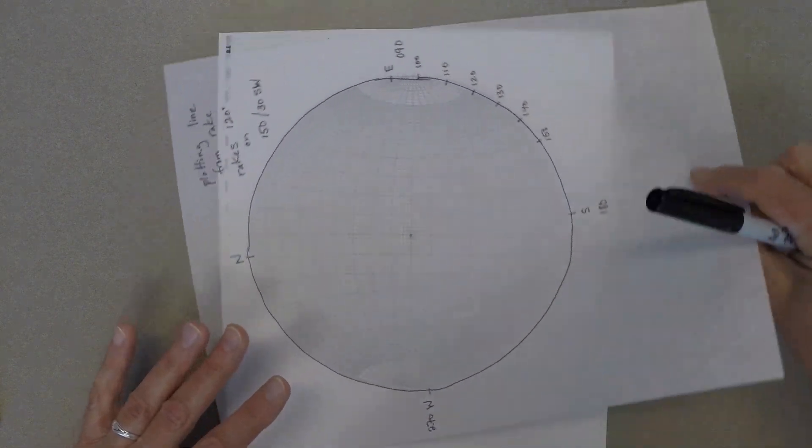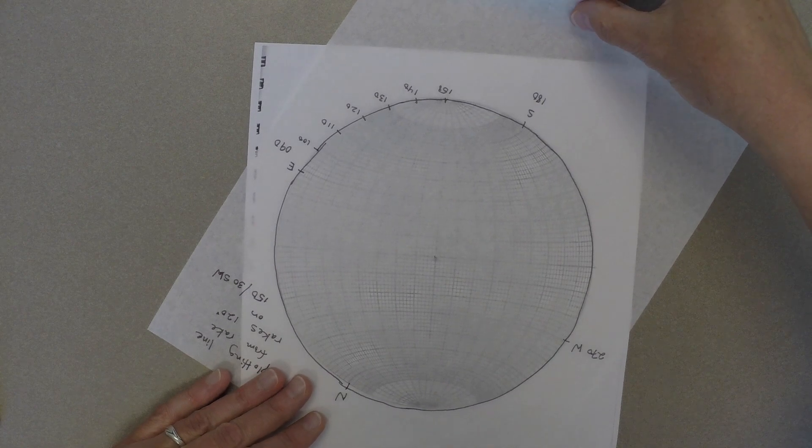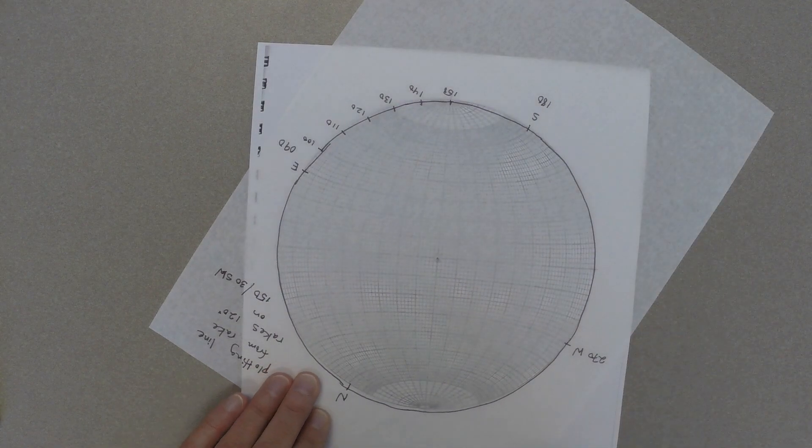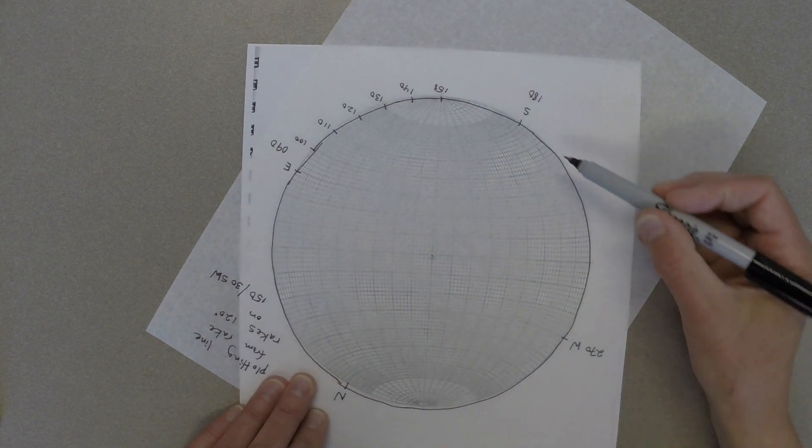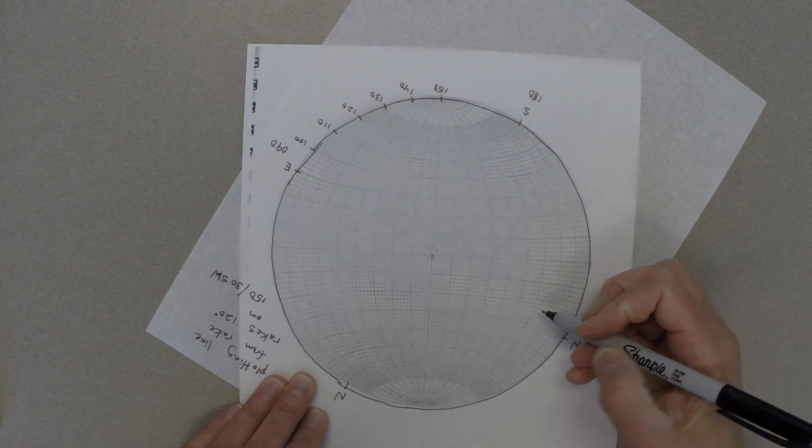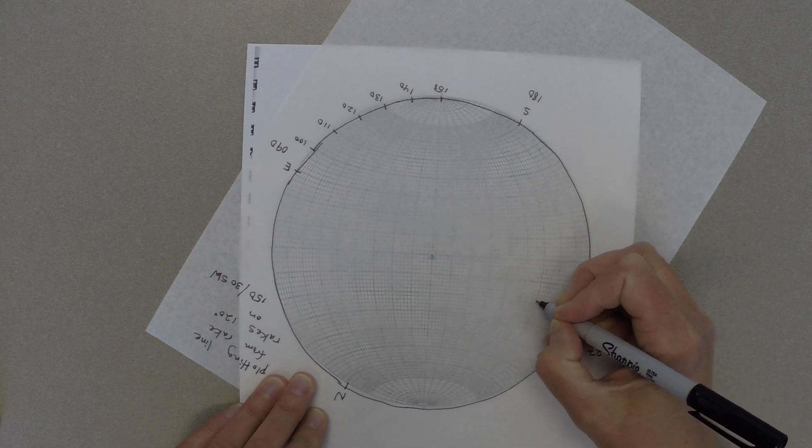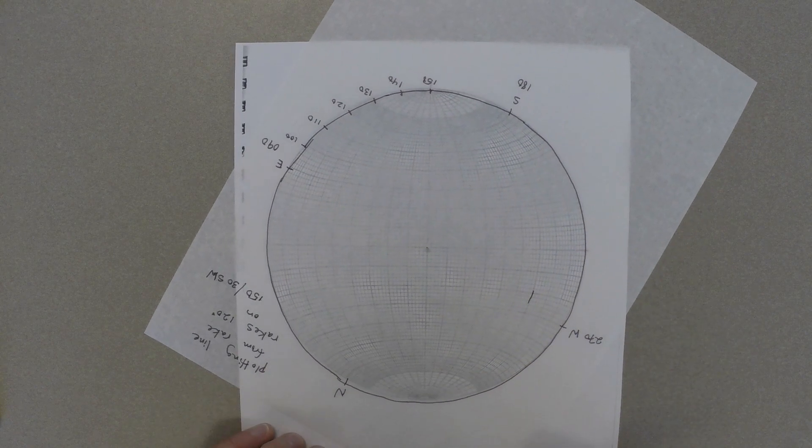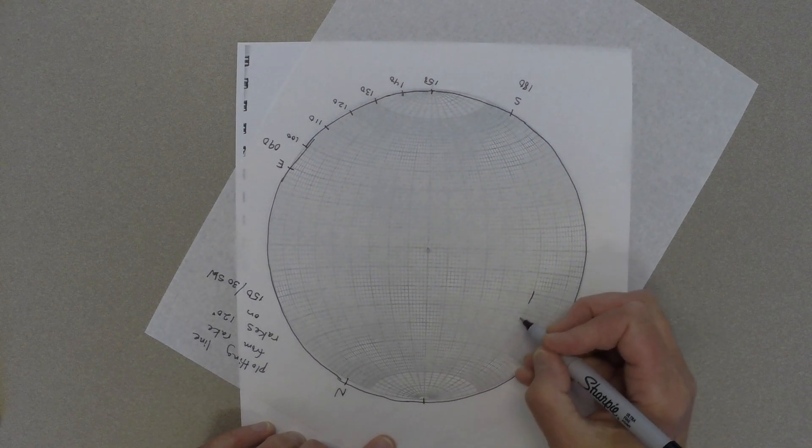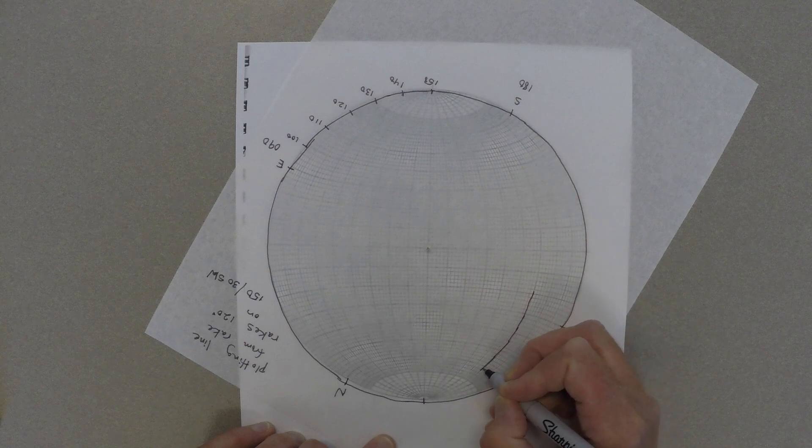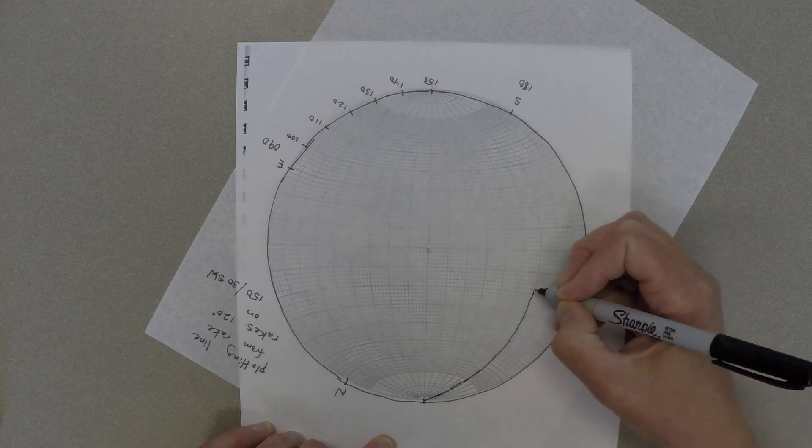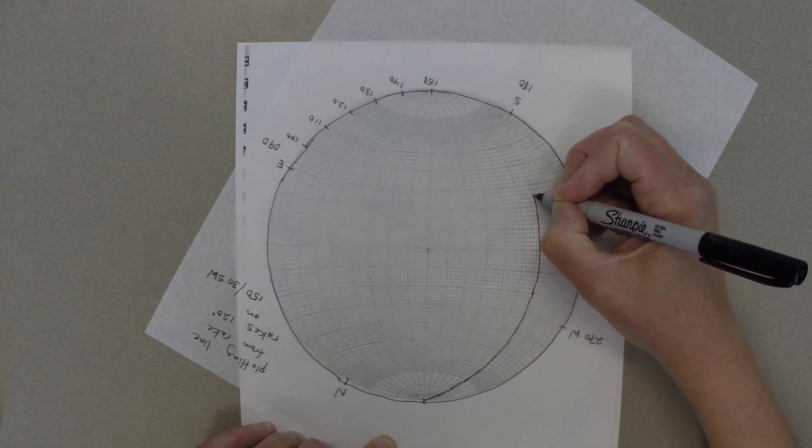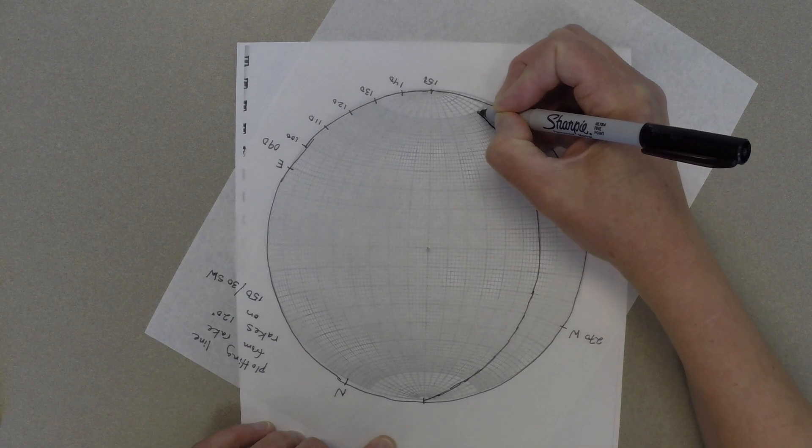Then we're going to spin the tracing paper so that the strike lies at north. Then we're going to plot the dip of the plane, and we're going to start by figuring out where the dip direction is, southwest, which is on the right-hand side of our tracing paper, and then we're going to count the dip 30 degrees in from the outside and trace the great circle that that 30-degree dip is represented by.